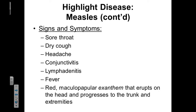If we look at measles, it has some fairly generic symptoms: sore throat, dry cough, headache, conjunctivitis — a.k.a. pink eye — lymphadenitis, and fever. There can also be red maculopapular exanthem or lesions that will erupt. Generally speaking, these will start in the mouth around the lips and the tongue, progress across the face, and then spread down the trunk and the extremities of the body.